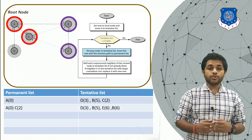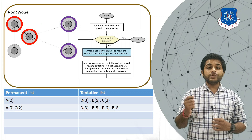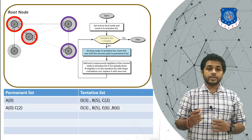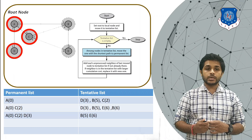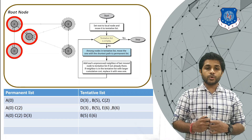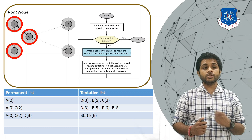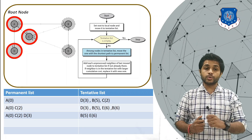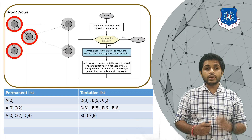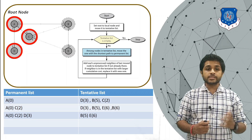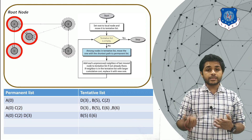Again, we move the node with the shortest distance from the tentative list to the permanent list. D(3) has the shortest distance, so we add D to the permanent list. After adding D, we check for unprocessed adjacent nodes. D has only one adjacent node, which is A, and A is already in the permanent list — it is a processed node — so we do not add A to the tentative list again.